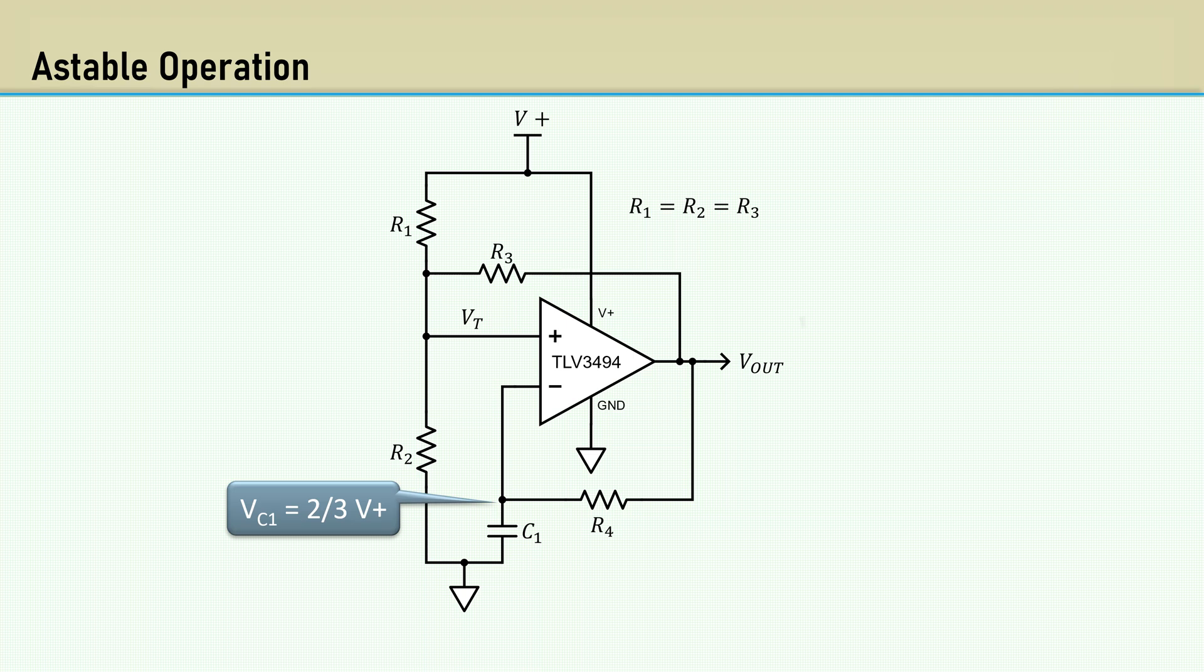This makes Vout go to zero volts, and R2 is in parallel with R3, which shifts Vt to one-third V+. With Vout at zero volts, C1 starts to discharge through R4.